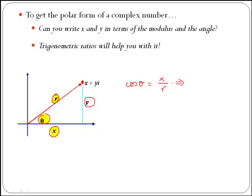If you want to get x by itself, you just need to multiply across by r, so we get x is equal to r cos of theta. So that is the x, written in terms of modulus and angle.